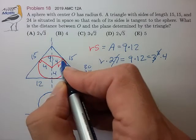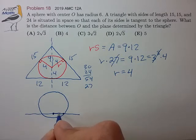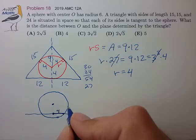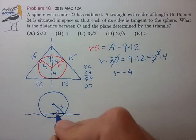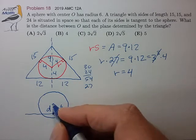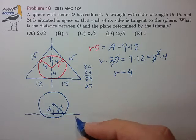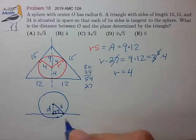We just determined that the radius in the plane of the triangle is 4, so we know this distance is 4. We know that the radius of the sphere is 6. And we're trying to find this distance from the center of the sphere to the plane of the triangle, d. And that kind of spells out a right triangle.